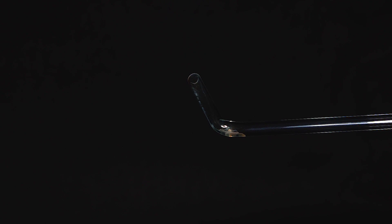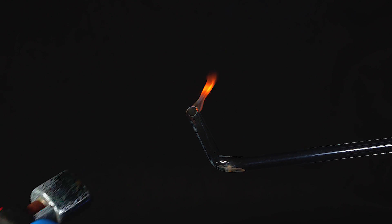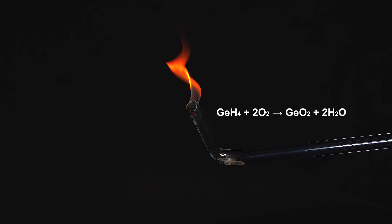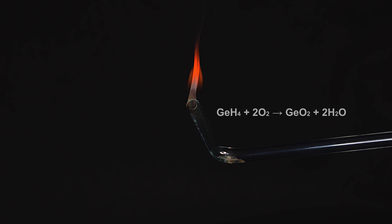In air germane burns in orange-red color. However, its combustion is interrupted due to the presence of argon in the mixture with germane and due to the lack of oxygen. This white smoke that forms during the combustion represents germanium dioxide.